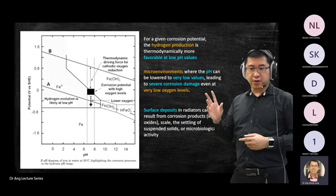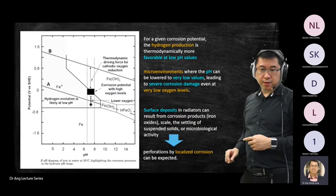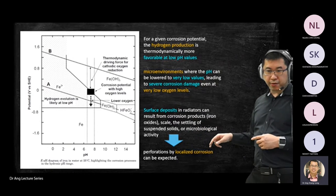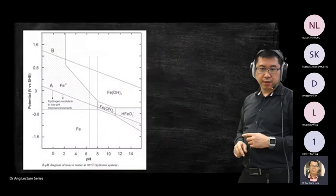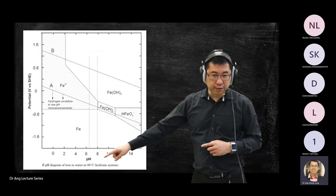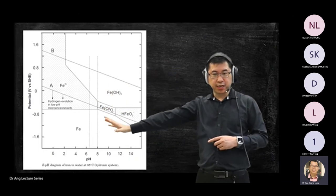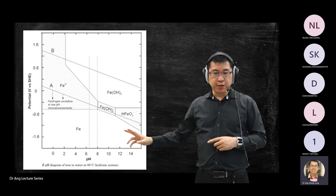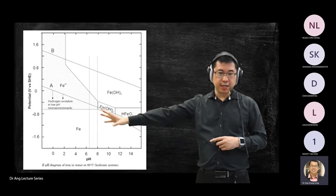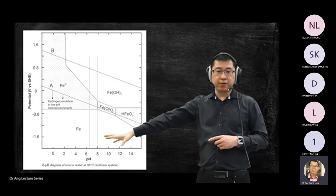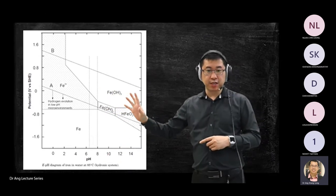When corrosion happens in the radiator, you will see a chocolate or orange color. There is a diagram for 85°C — there is a V versus pH diagram (potential versus pH diagram) for that temperature. When you read an E-pH diagram, you have to be careful about temperature because different temperatures give different settings. You cannot take the 25°C case to analyze cases at 85°C — you must use the correct graph.